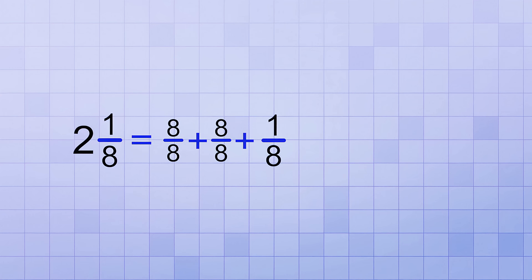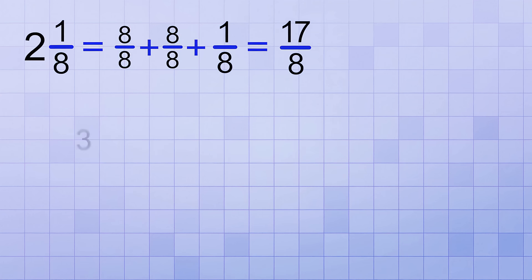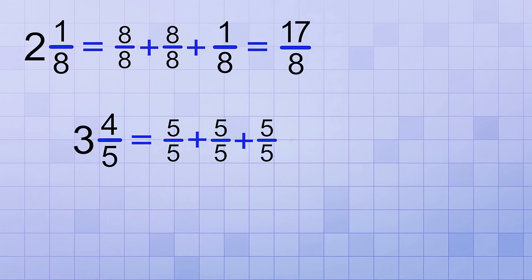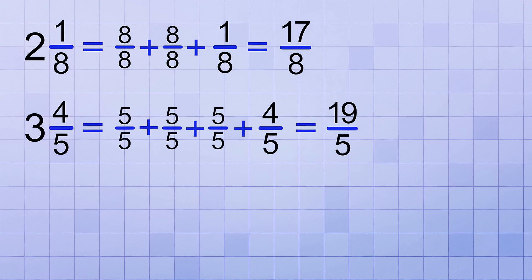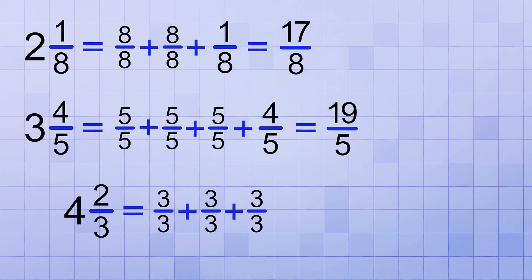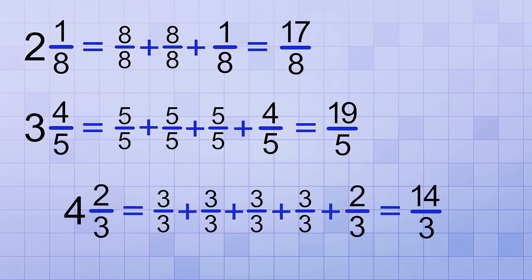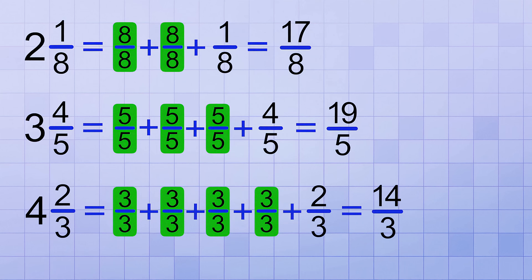You can convert any mixed number into an improper fraction using that procedure — change the whole number part into a sum of whole fractions, then add everything up. For example, 2 and 1 eighth becomes 8 over 8 plus 8 over 8 plus 1 over 8, which adds up to 17 over 8. And 3 and 4 fifths becomes 5 over 5 plus 5 over 5 plus 5 over 5 plus 4 over 5, which adds up to 19 over 5. We always choose whole fractions with the same denominator as the fraction part, so they're like fractions that can be added easily.